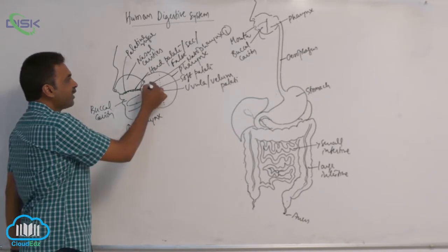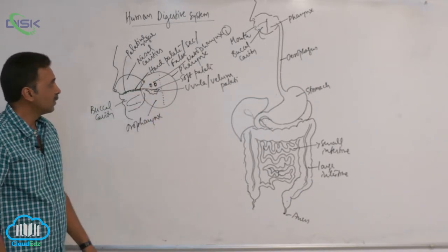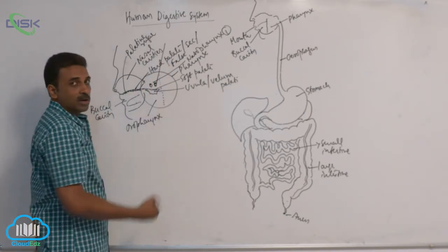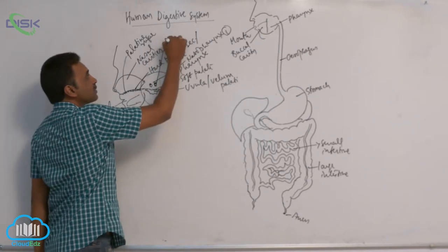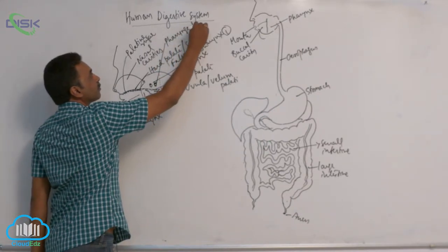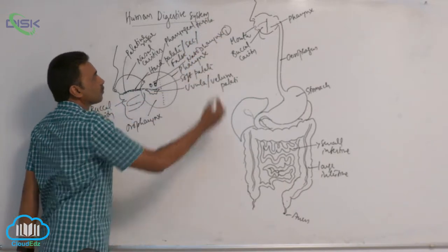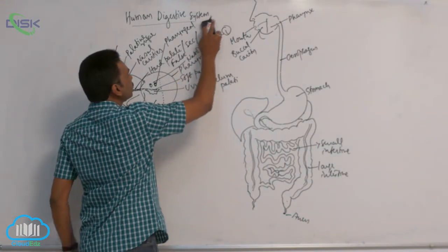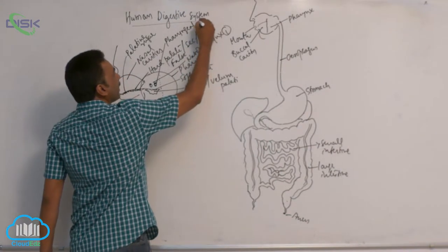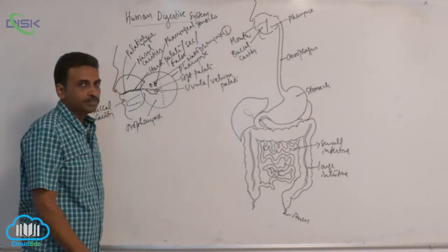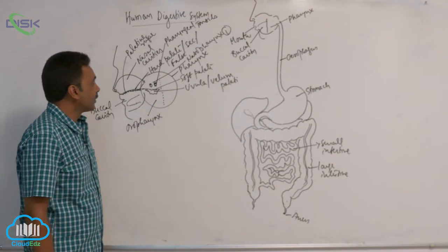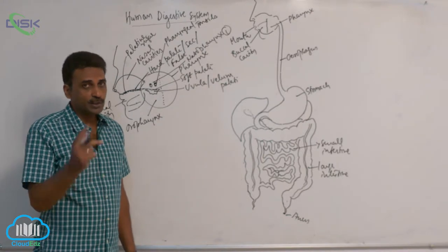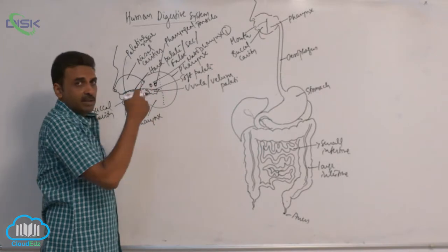You will find tonsils in the nasopharynx. These are called pharyngeal tonsils, also known as nasopharyngeal tonsils — they are the same structure, present in the nasopharynx.